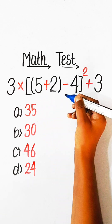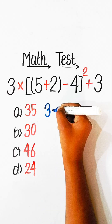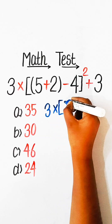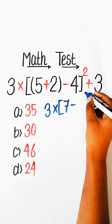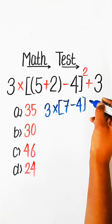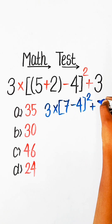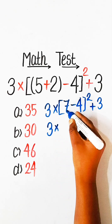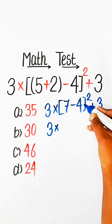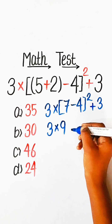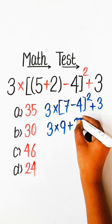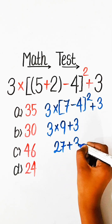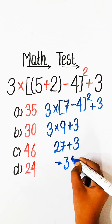Firstly, we have to solve the bracket part. So we will write here: 3 multiplied by 5 plus 2 is 7, minus 4 squared, plus 3. So 3 multiplied by 7, minus 4 is 3. So 3 squared is 9, plus 9.